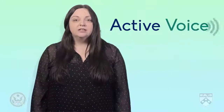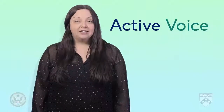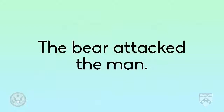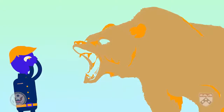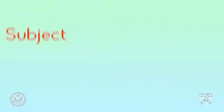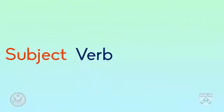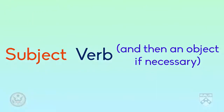Let's start with active voice. The subject in an active sentence is the doer of the verb. For example, 'The bear attacked the man.' In this sentence, it's clear that the bear was the one who attacked, and the man is the victim. The structure of an active sentence is subject followed by verb, and then an object if necessary.